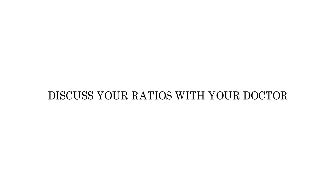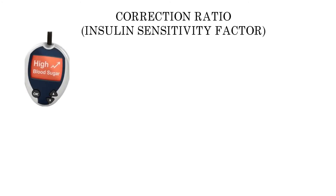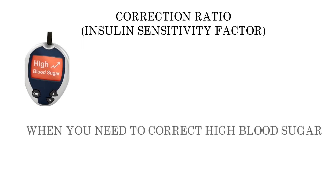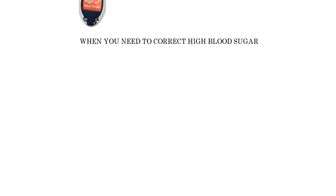The other factor we will discuss is the insulin sensitivity factor, also called the correction factor. This is used if your blood sugar is high and needs to be brought down. To calculate this, we need a few pieces of information. First is the target blood sugar, which is generally provided to you by your doctor.